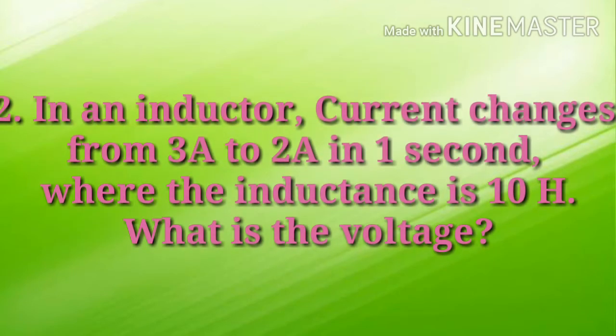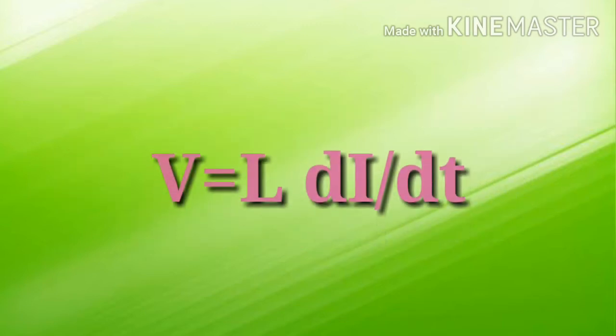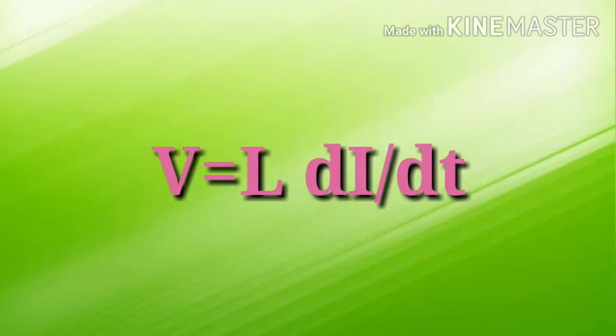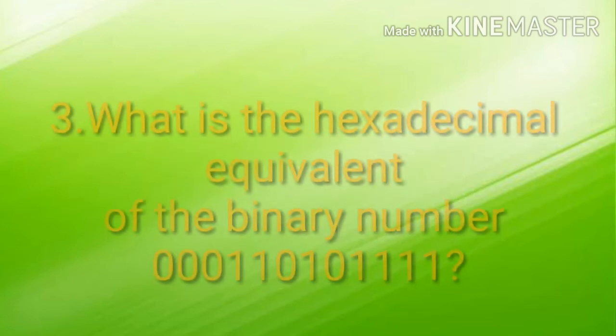In an inductor, current changes from 3 ampere to 2 ampere in one second where the inductance is 10 henry. What is the voltage? The voltage equation is V = L·(di/dt), where V is the voltage, L is the inductance, I is the current, and T is the time. Please solve this equation and find your answer and comment it below.